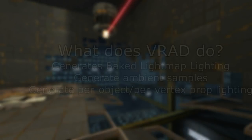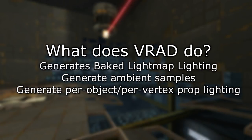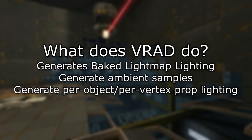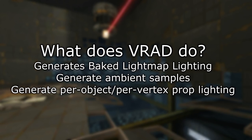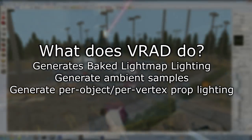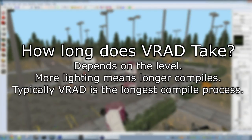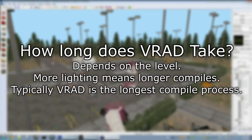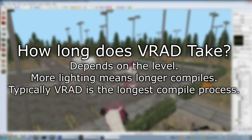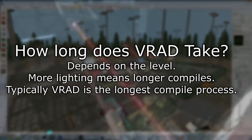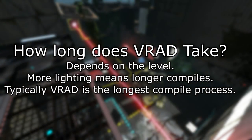When VRAD runs, it will generate lightmap lighting, create ambient sampling, and also generate per-object or per-vertex prop static and detail prop lighting. Generally speaking, VRAD is the slowest compile process, assuming that VVIS isn't slower because your level is improperly optimized. There's really no way to speed up VRAD other than lightmap optimization.